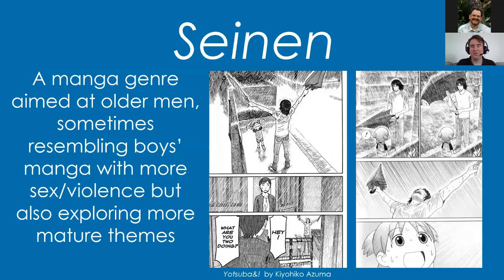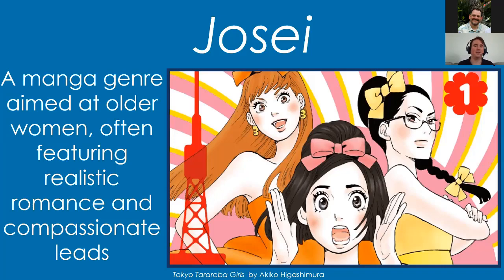Josei is manga aimed at older women. Where Shoujo might be more idealistic and sparkling with its romance, Josei tends toward more realistic stories with compassionate leads. The series Tokyo Tarareba Girls — I'd call it the Sex and the City of manga — follows three career women who are dating, always coming together to compare how their dates are going, texting each other to say 'I had a terrible night, meet up with me now.' They lean on each other as a support network.